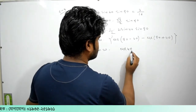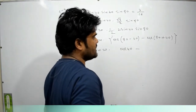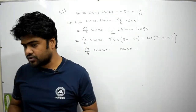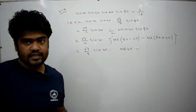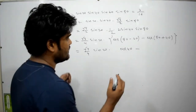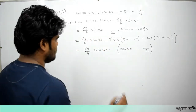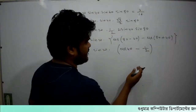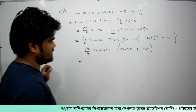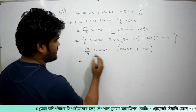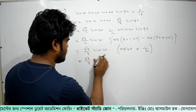Minus cos 80 plus 40, root 3 by 4, sin 20. Then cos 40 minus cos 120 degrees. Cos 120 degrees means minus half. If we have confusion, we will check our calculator to confirm that cos 120 degree equals minus half.